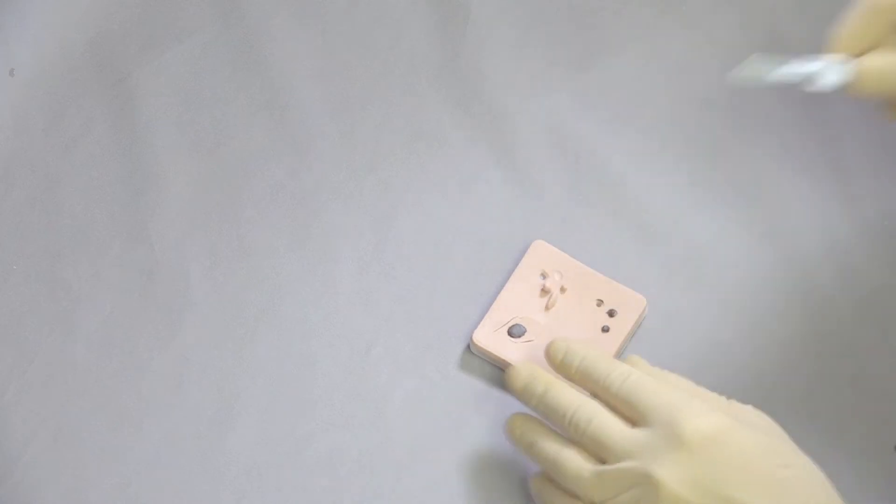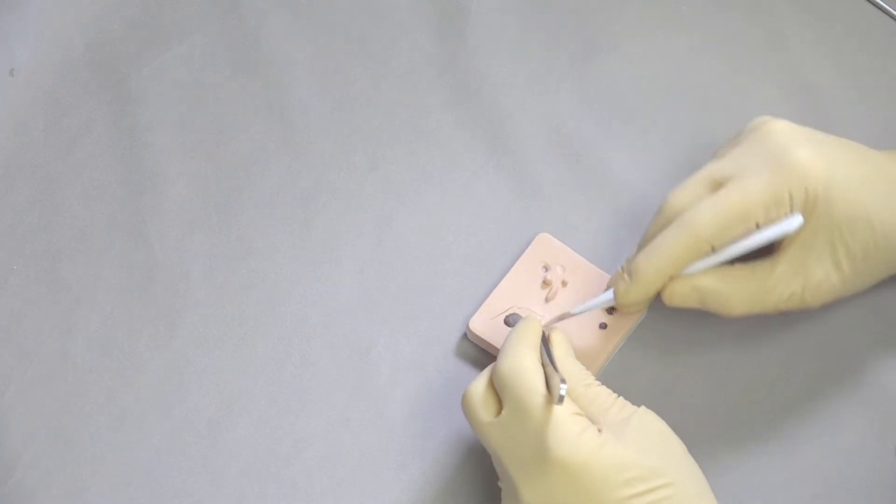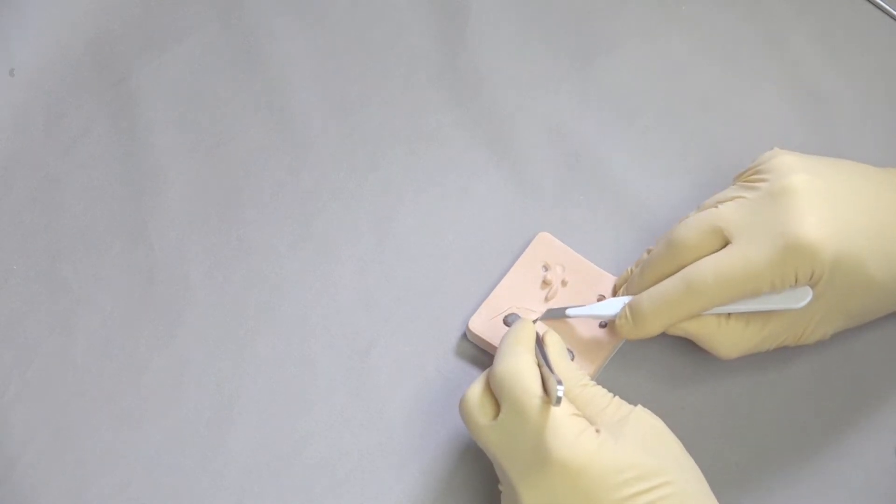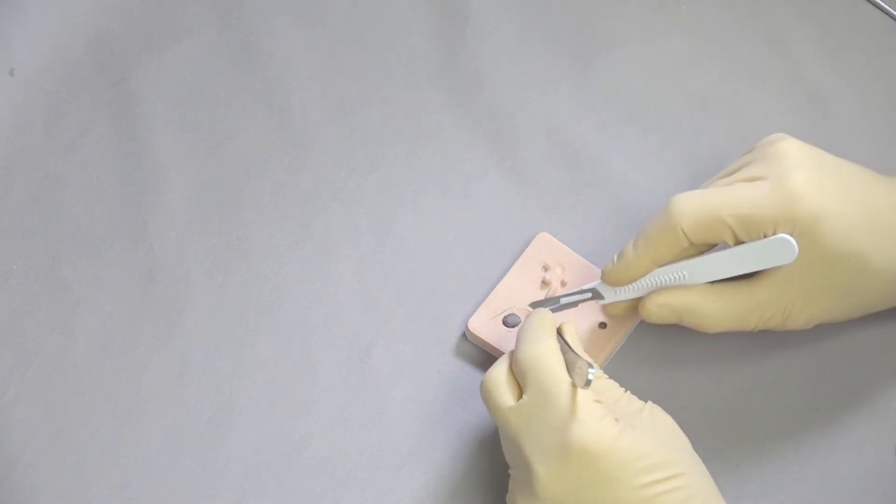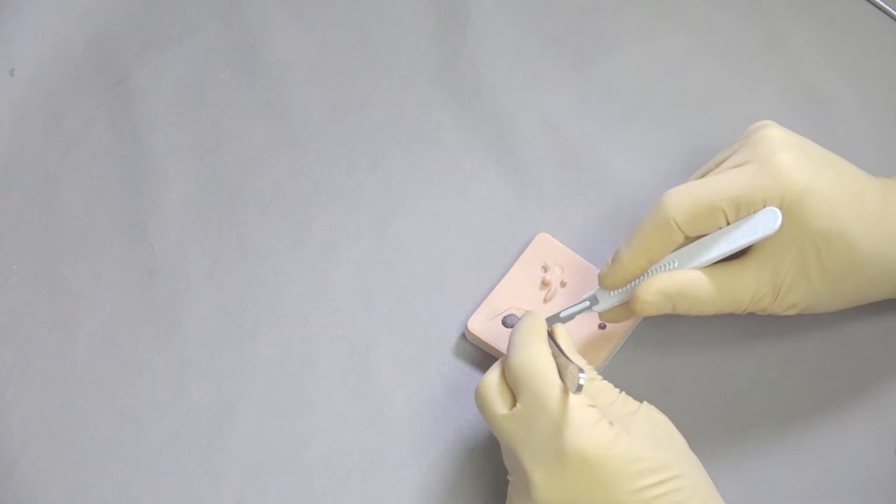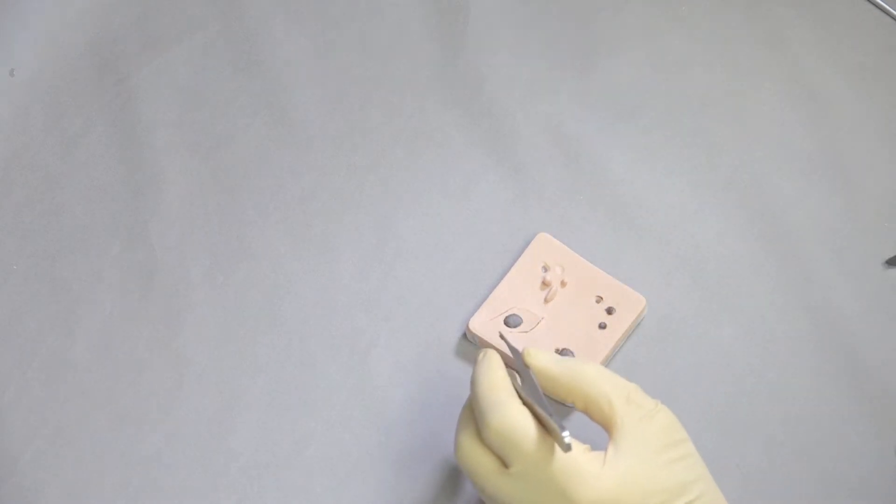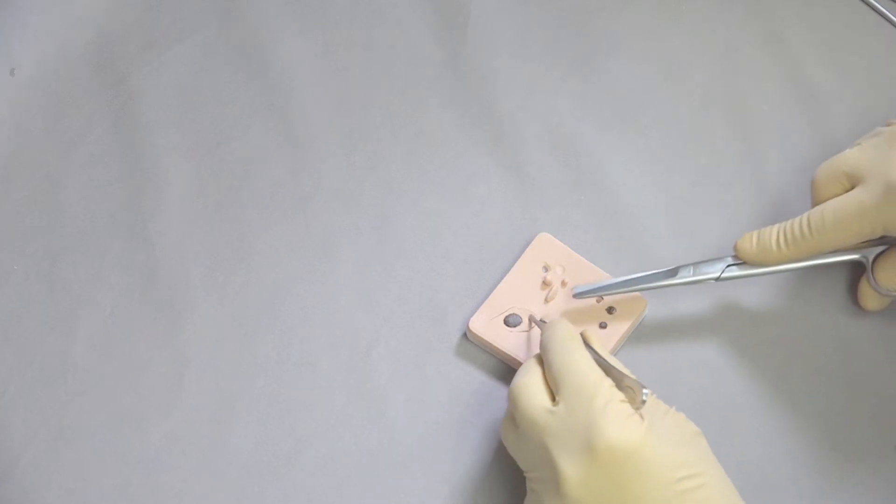So when you do excisional biopsies you end up taking more tissue and that's one of the reasons a lot of people like to do just the biopsies with just the biopsy instrument. But in this case we're going to close it and it will close better if we do an elliptical or fusiform incision than if we did just a round incision.